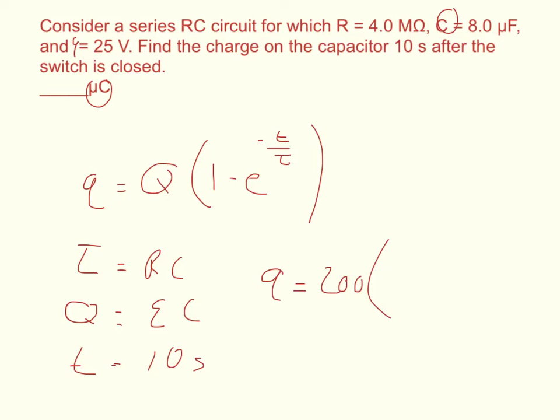I'm going to multiply that 200 by 1 minus E, so 2.7, I think it's 2.718, so 2.7 is what I'm going to put, to the negative 10 over, and it's divided by R times C. But R is in mega ohms, and it has to be in ohms for this to work.